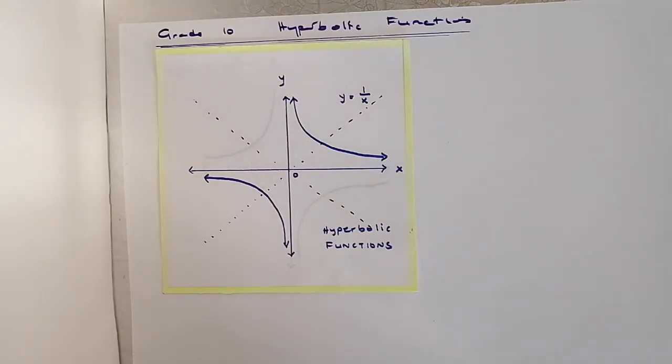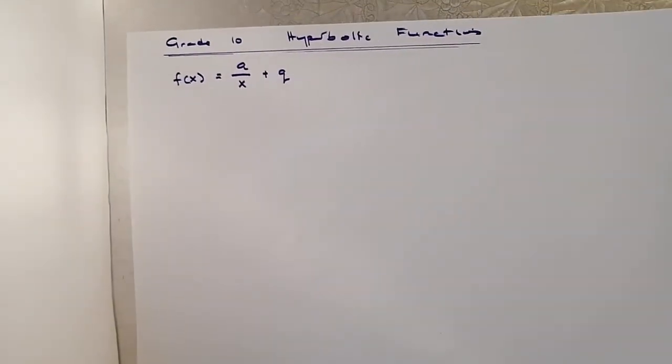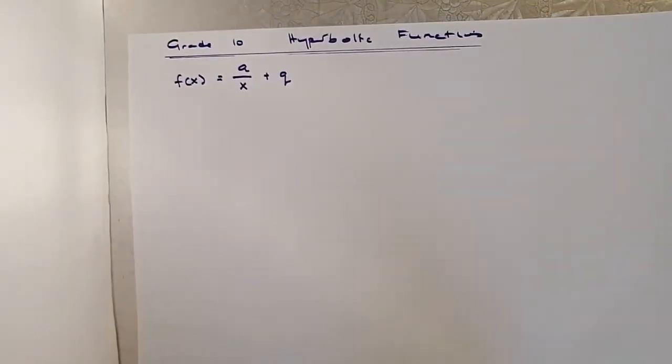And for the sake of this video, we're going to limit ourselves to the vertical shift of the graph. f of x equals a divided by x plus q is the equation that we're going to use.